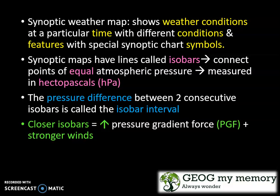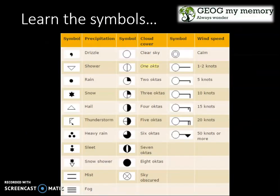The closer the isobars, the higher the pressure gradient force and the stronger the winds. You need to learn the examples in order to interpret this from your synoptic weather map. You need to know different types of precipitation, cloud covers, and how to calculate wind speeds.